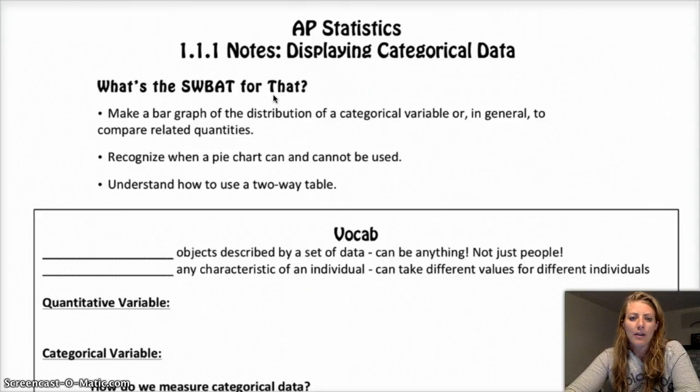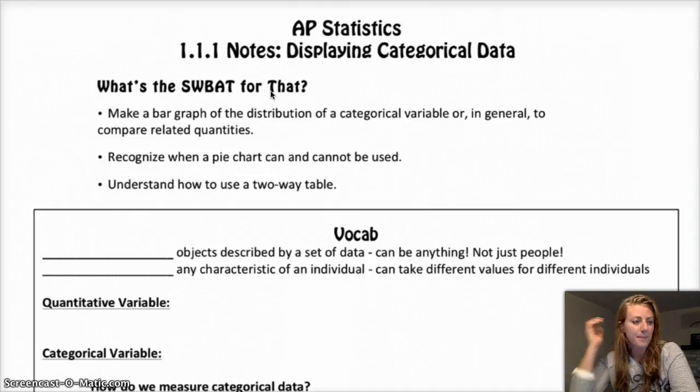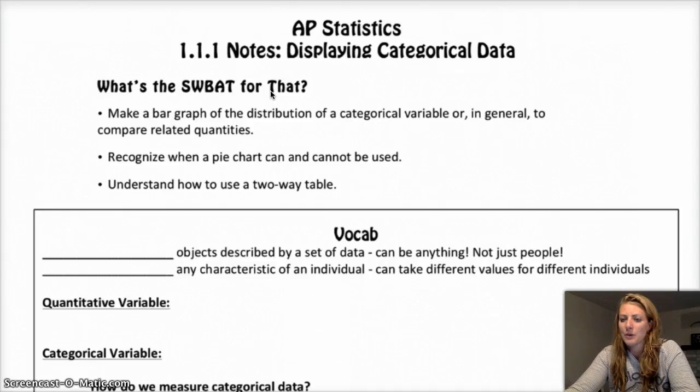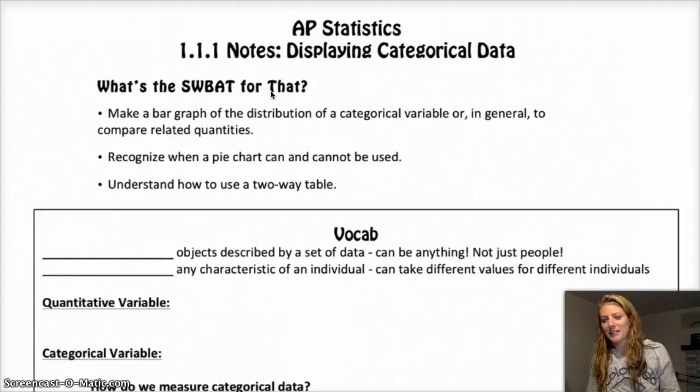Okay, so we're going to talk about data, different types of data that exist in the world, and then how to deal with it, how to display it, how to analyze it at the very basic level. So that's Chapter 1, basically what it's about. But we're going to start with categorical data.